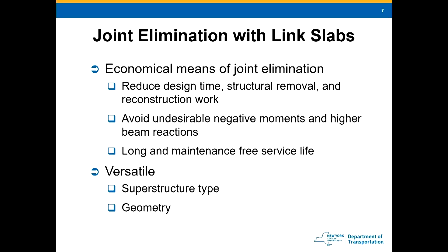We think link slabs are the best way to eliminate joints. It's economical — we reduce the design time that comes with adding continuity. The amount of structural removal is much less; it's very confined to just around the pier, and you don't have to strengthen your top flange out into the spans. We also avoid those higher beam reactions. Link slabs offer a long and maintenance-free service life. They're also really versatile — you can use them on many different superstructure types: steel beams, concrete beams, trusses, just to name a few that we've done.